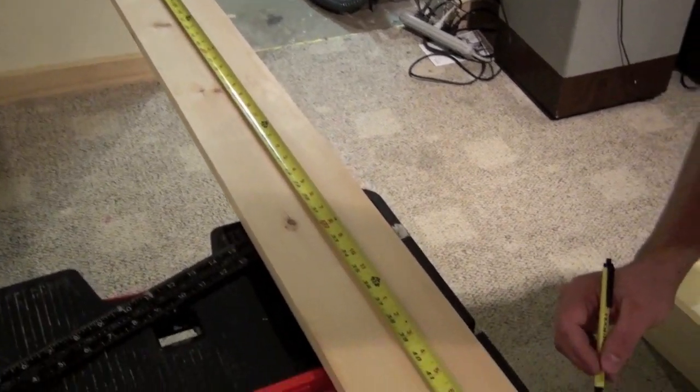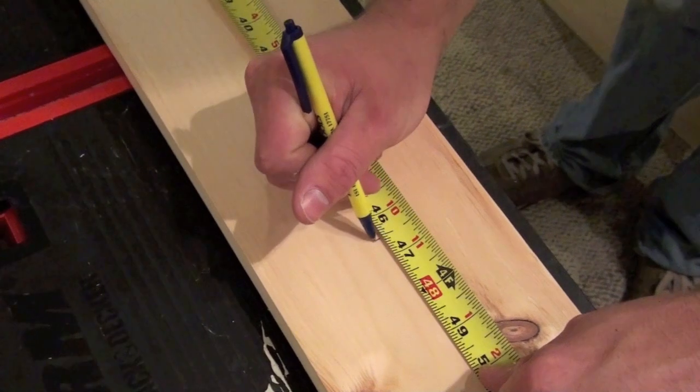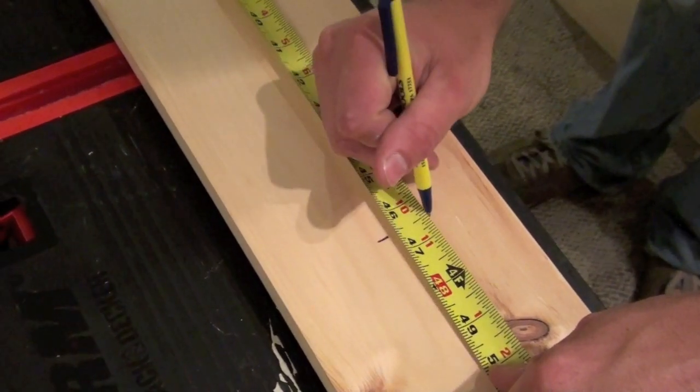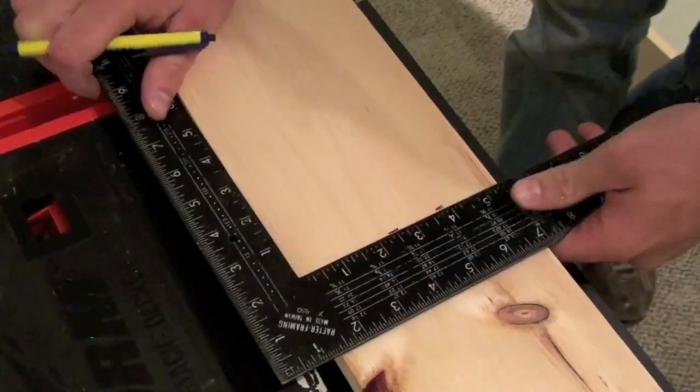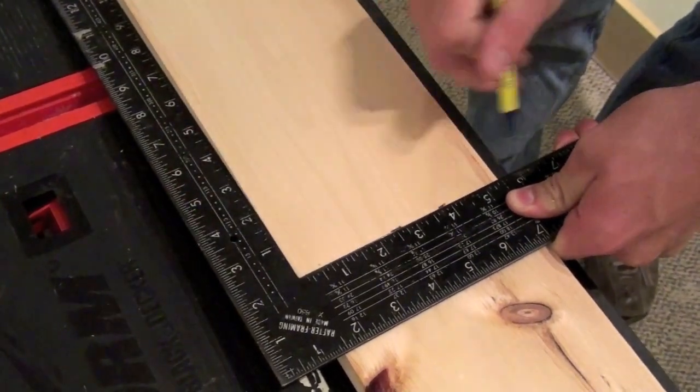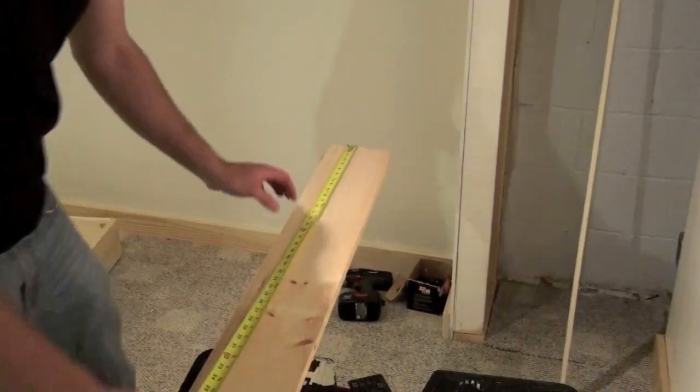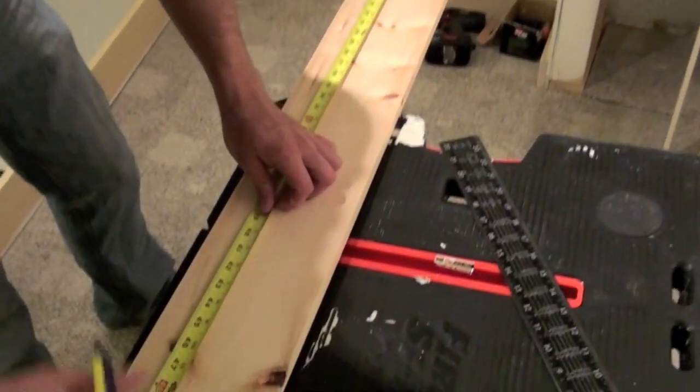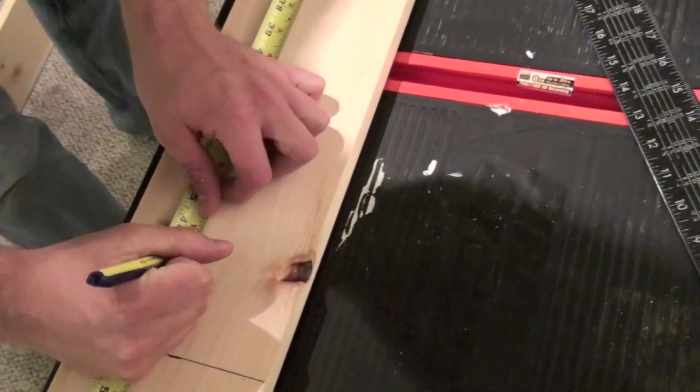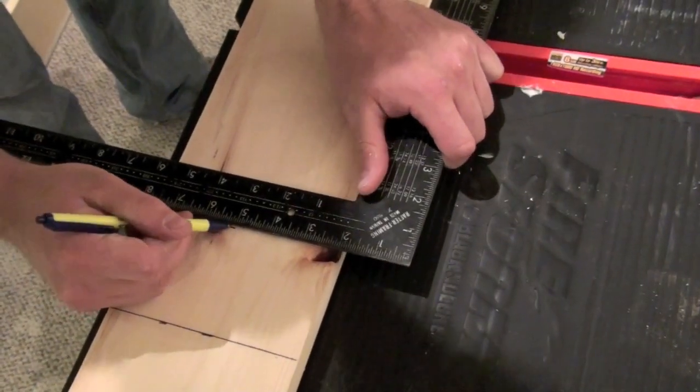We start by taking one of our planks and measuring 46.5 inches and making a mark. We then take a square and square this off. We do the same from the other end, measuring 46.5 inches, make a mark, and square that off.